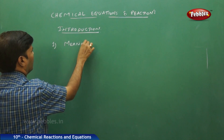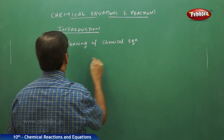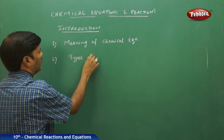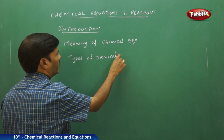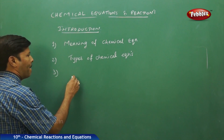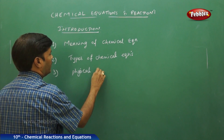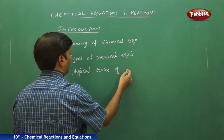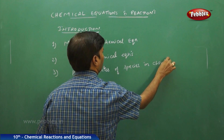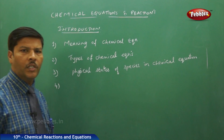First, the Meaning of a Chemical Equation. Then, Types of Chemical Equations. Then, the Chemical Changes and Physical States of Species in a Chemical Equation.